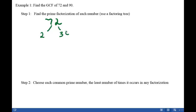2 times 36, 36 can be broken down into 2 times 18, 18 can be broken down into 2 times 9, and 9 can be broken down into 3 times 3. So at the end of each branch is a prime number.